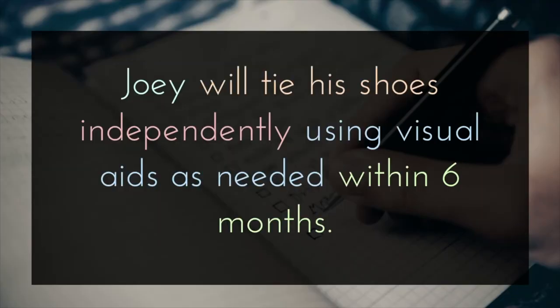Let's look at another example: 'Joey will tie his shoes independently using visual aids as needed within six months.' Here you'll see that Joey is the client, tying his shoes is the occupation, independently is the assistance level we're expecting, using visual aids as needed is the specific condition, and within six months is the timeline.